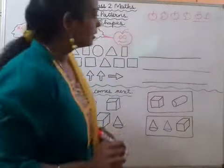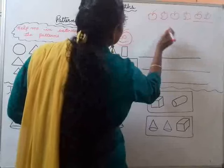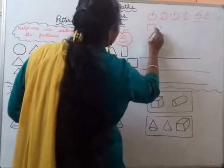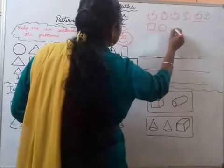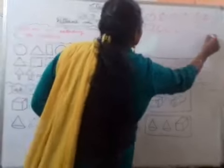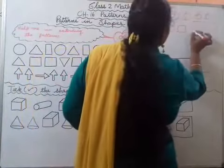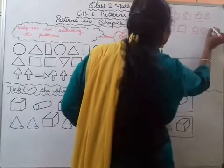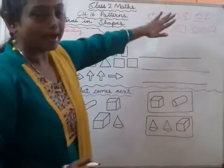Same way we can do like this also. Square, circle, circle, square. What will be the next one? Circle. Do baad circle haane ke baad, fir square. So this is called patterns.